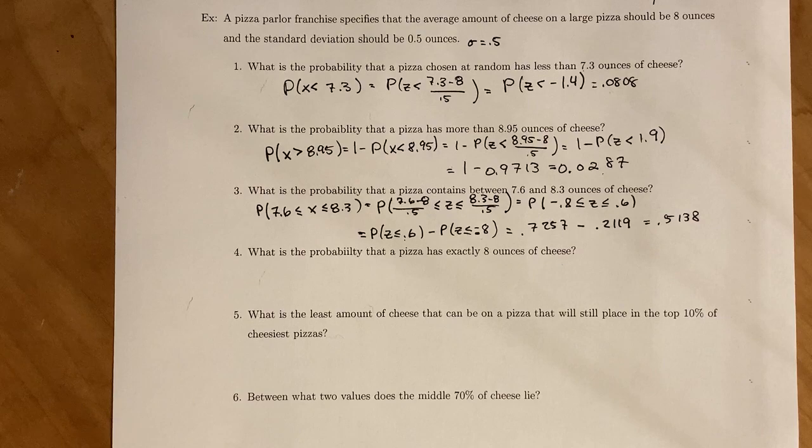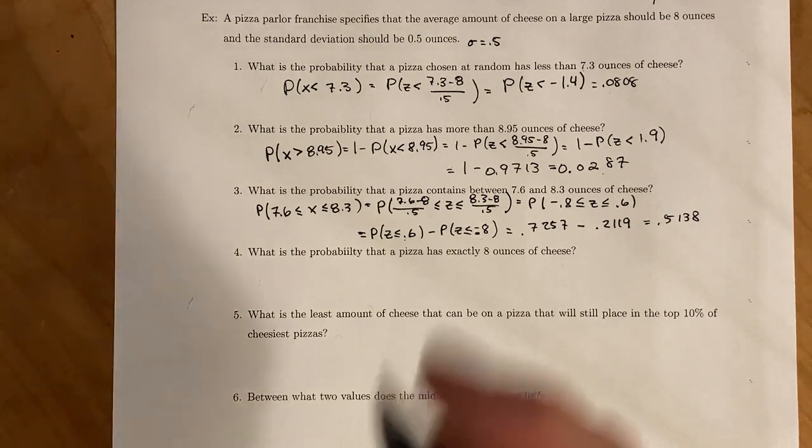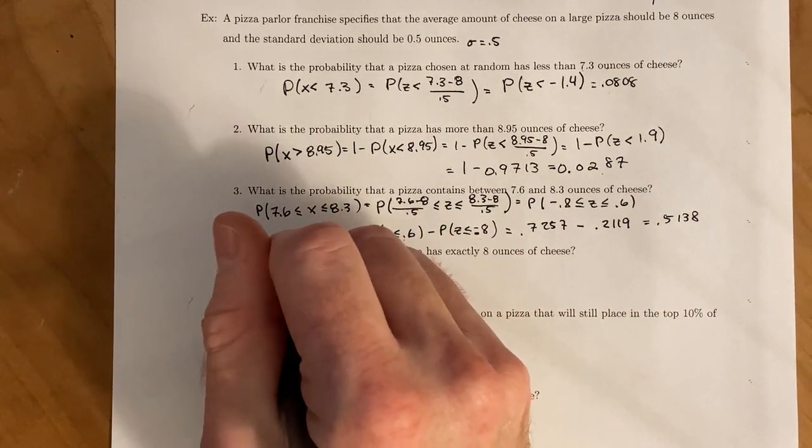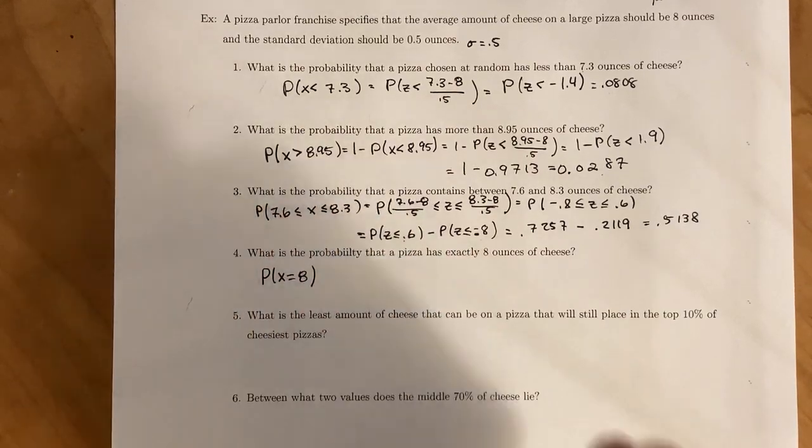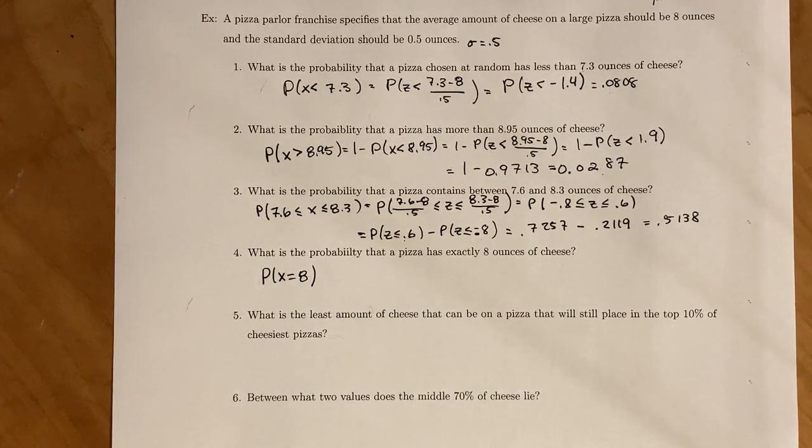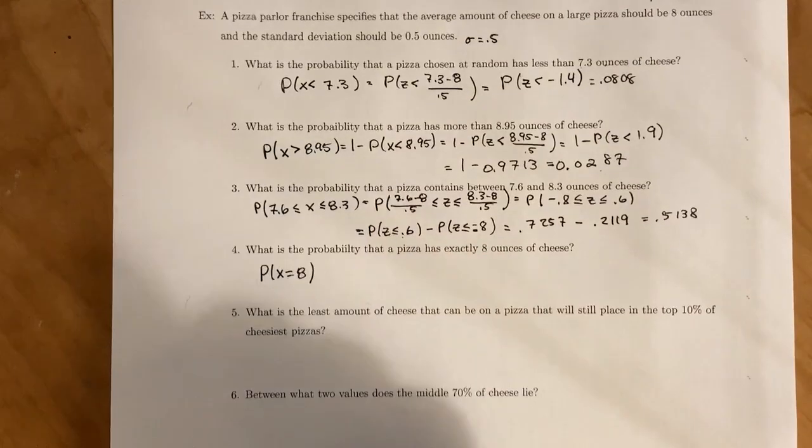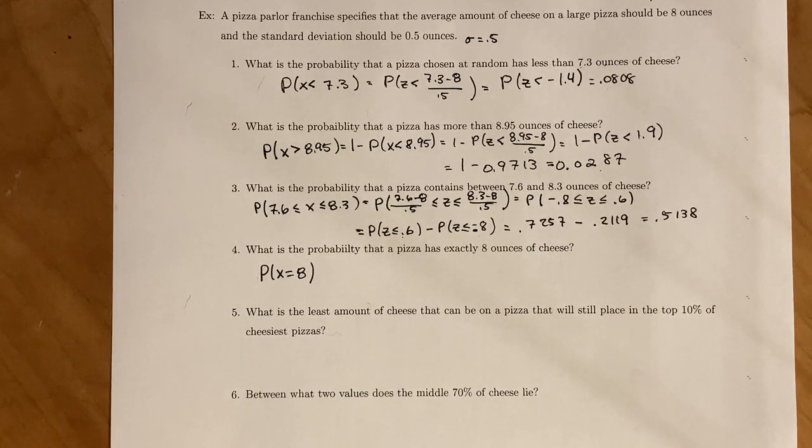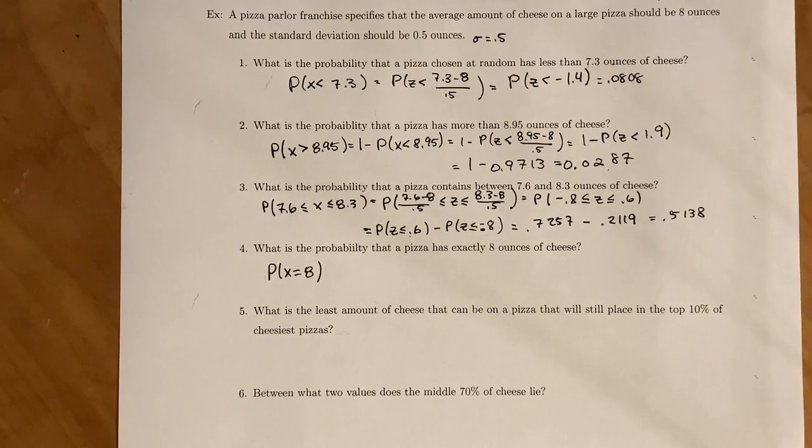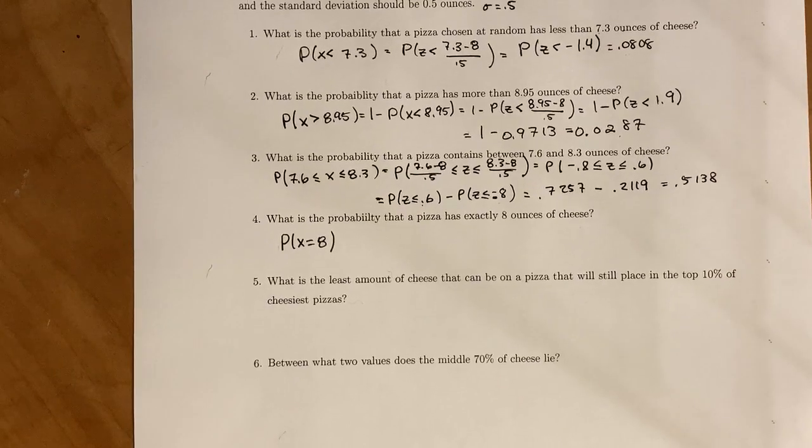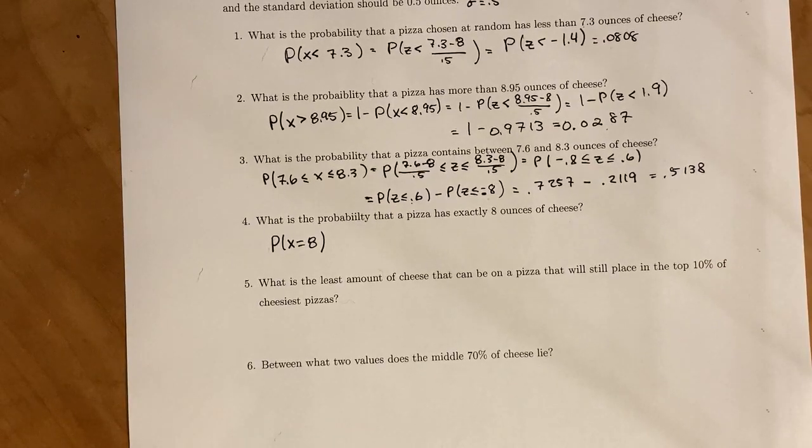Next, we want to find the probability that a pizza has exactly 8 ounces of cheese. Probability that x equals 8. If you think back to our discussion at the end of 5.1, the area of a line segment is 0. So the probability that you randomly select a cheese pizza that has exactly 8 ounces of cheese is probability 0. Does not mean that it cannot happen. It just means that it is very unlikely that it will happen.